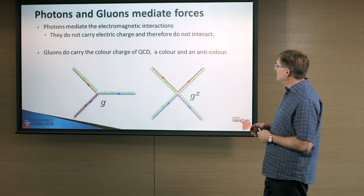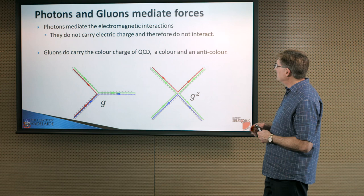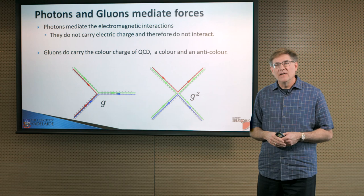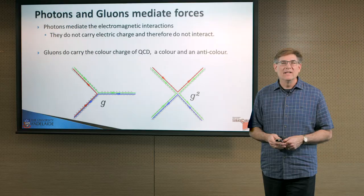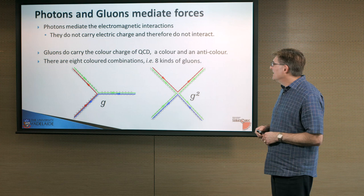Now, how many gluons are there? You can see that they're composed of a color and an anti-color. It's a nice way of thinking about them. And you might be thinking, okay, that's three colors, red, green, and blue, times three anti-colors. That's nine gluons. But one of them is a color singlet. Red anti-red, plus green anti-green, blue anti-blue. That one doesn't count. And so there are actually eight colored combinations, or eight kinds of gluons.